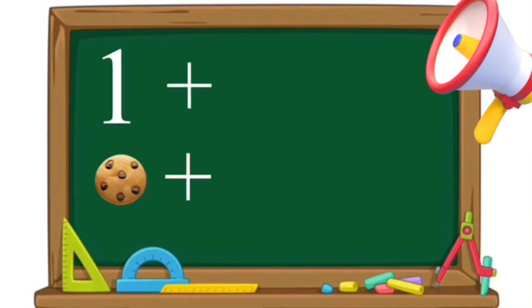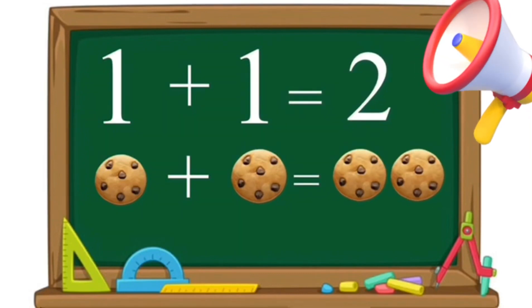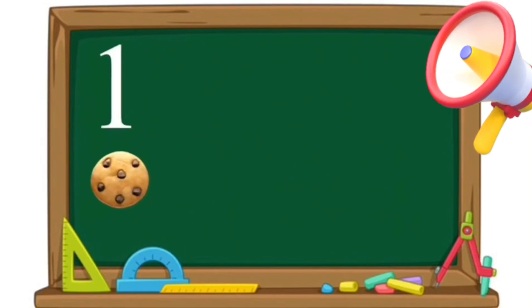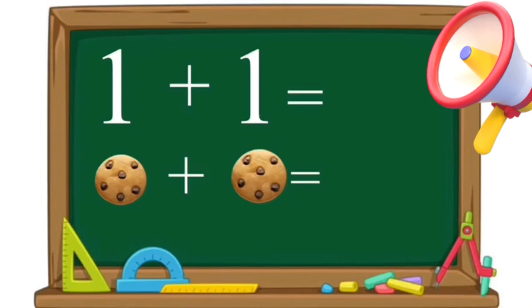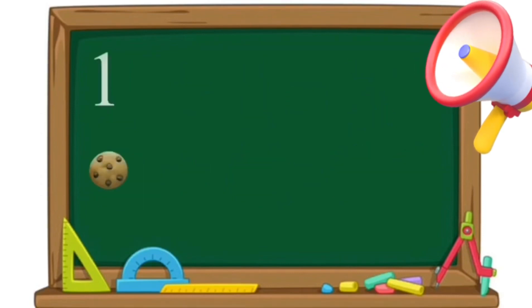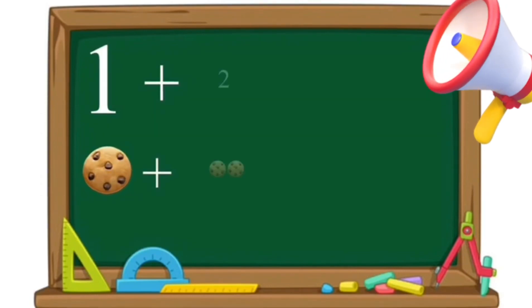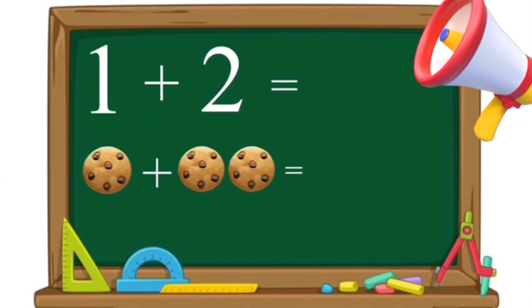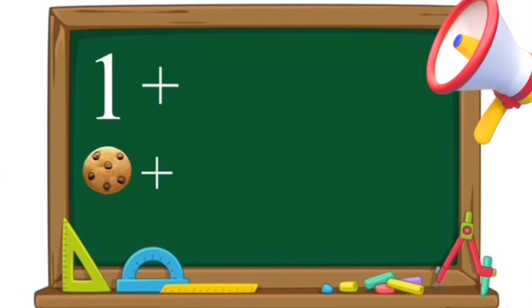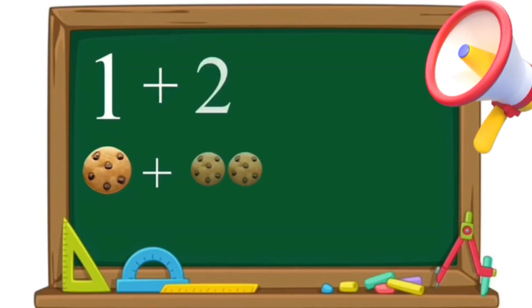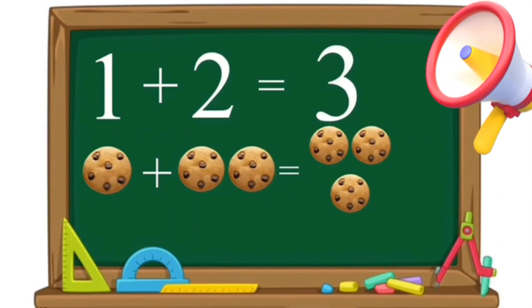One plus one equals two. One cookie plus one cookie equals two cookies. One plus two equals three. One cookie plus two cookies equals three cookies.